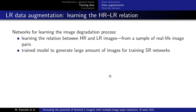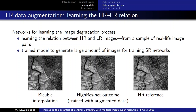We have also worked on networks for augmenting the data. These networks were trained to learn the relation between high-resolution and low-resolution images, and then we used these models to generate large amounts of images for training super-resolution networks. This is an example of the results obtained for the simulated data, in which HighResNet was trained with the augmented data, and we can see that the reconstruction outcome is quite close to the high-resolution reference. We are now working on applying that to the real-life scenario.